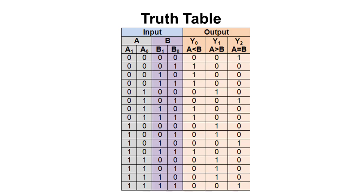We have two inputs A and B and three outputs y0, y1, y2. The input A is divided into two parts: a1 and a0, and input B into b1 and b0. So we have these two binary digits which we are comparing — a1,a0 is compared with b1,b0.